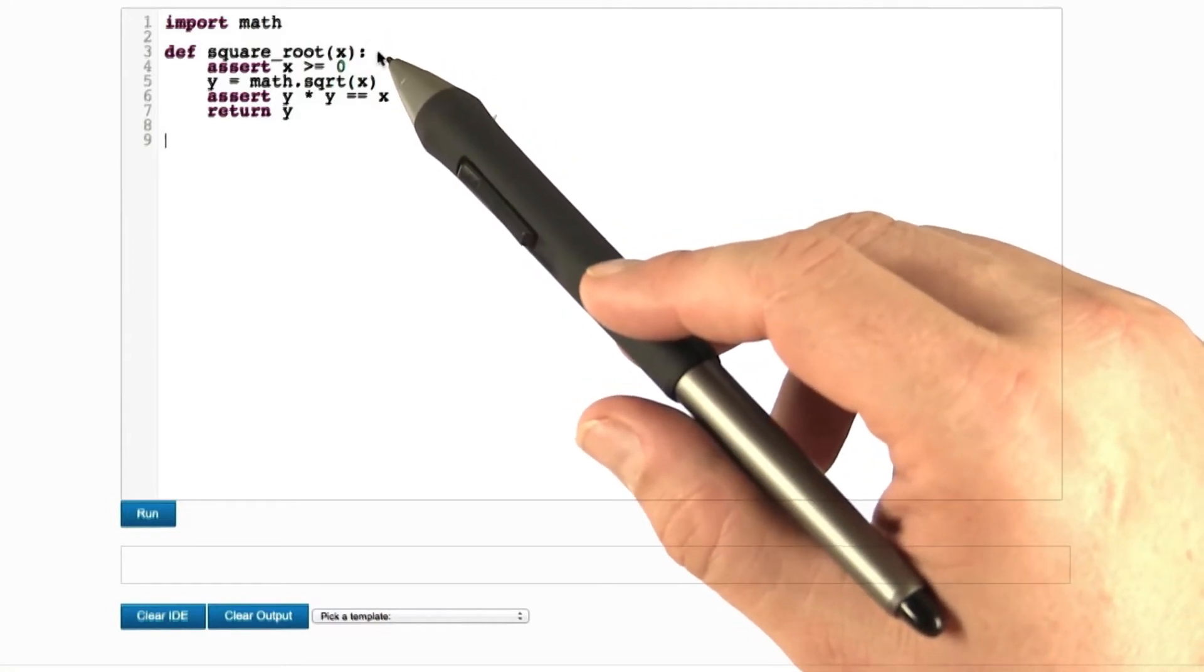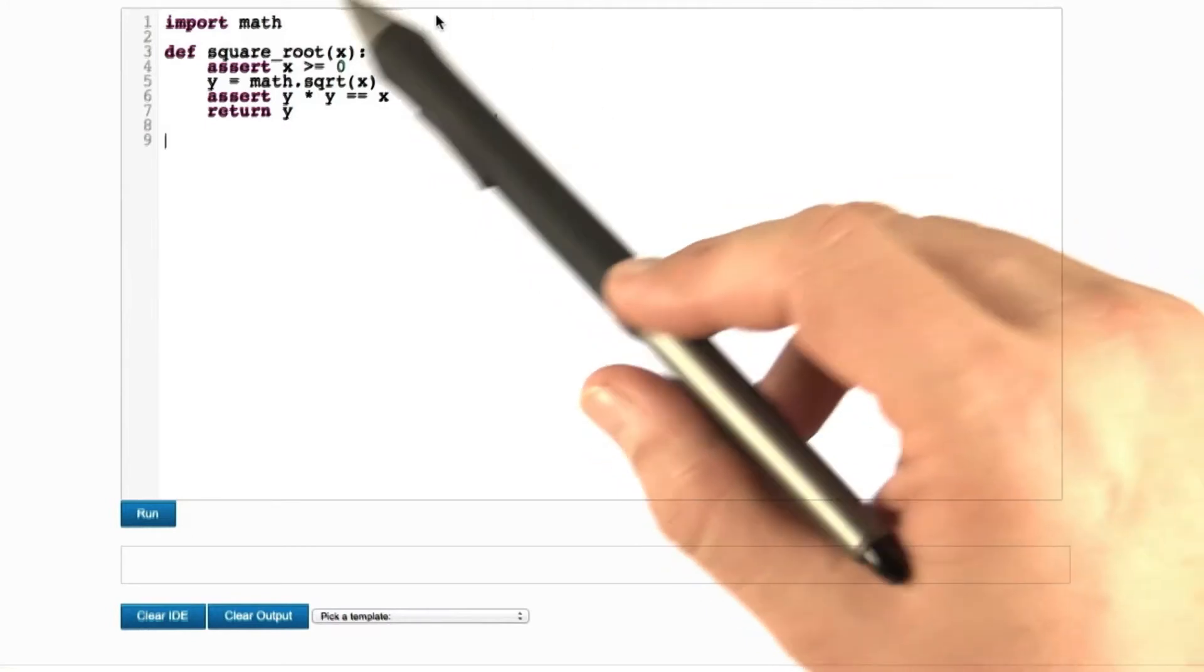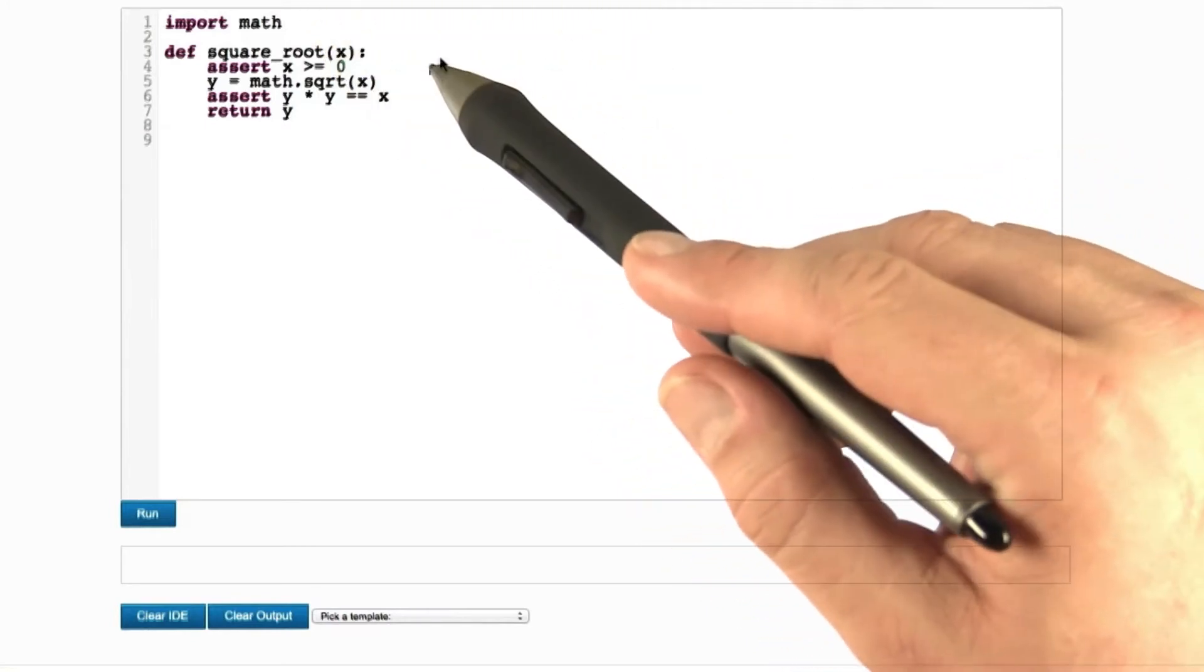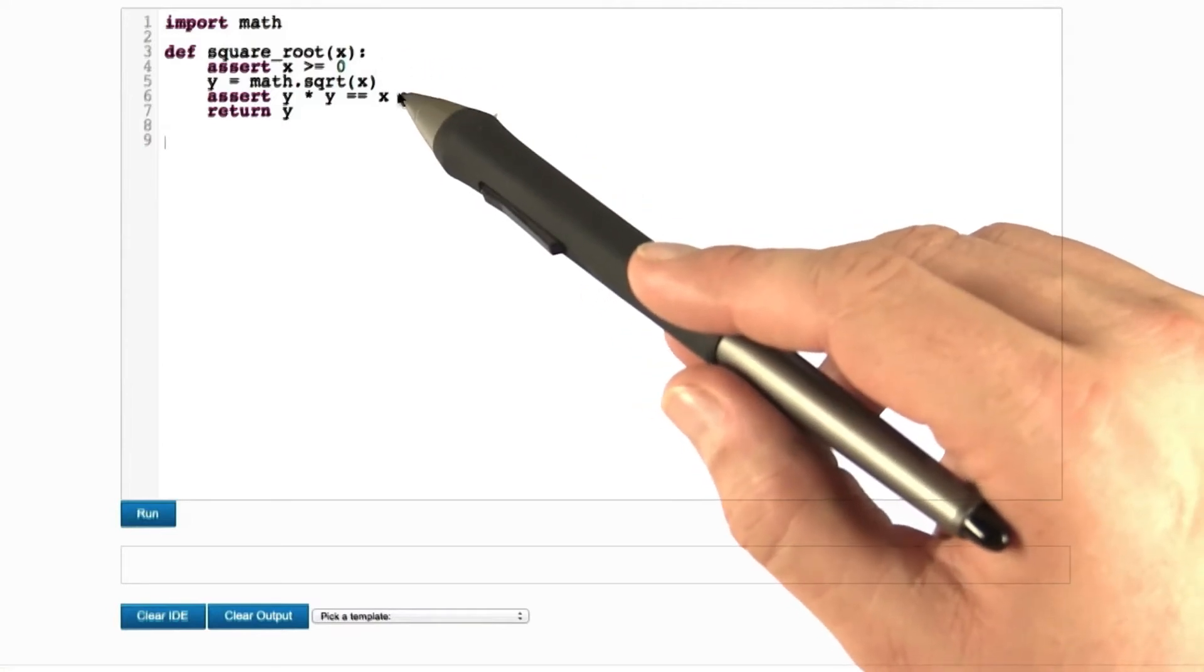Here's a very simple implementation of our square root function. We simply invoke the built-in Python square root function from the math module, and we have set up appropriate assertions to check for the precondition and for the postcondition.